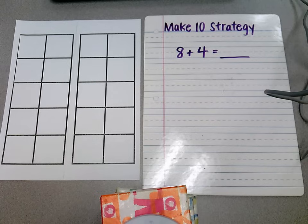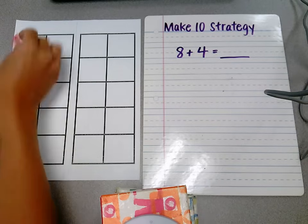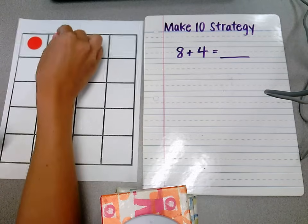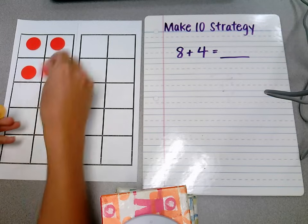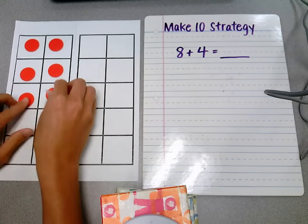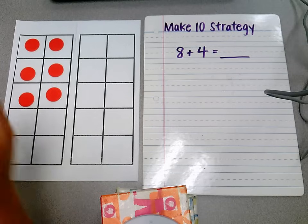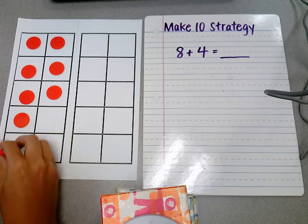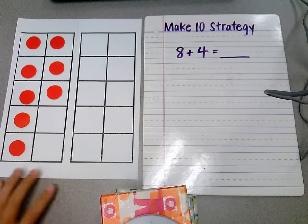So in the Make 10 strategy, basically we have students recognize that 8 is part of 10. So using the 10 frame to illustrate this process. Okay, so there we have 8 plus the 4.